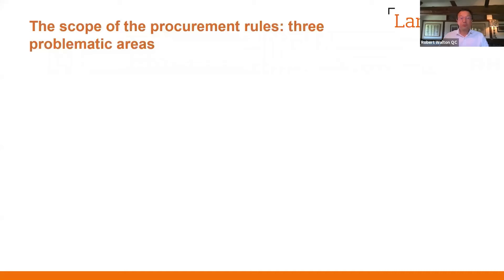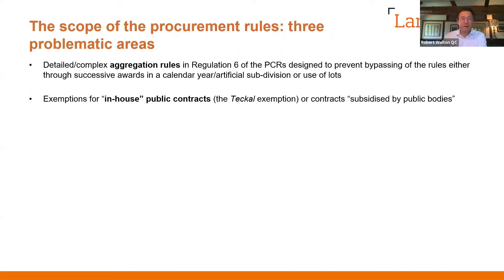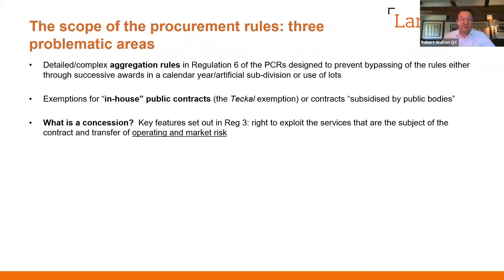Three problematic areas in terms of the scope of the rules. First, aggregation rules in Regulation 6, designed to prevent bypassing the rules through successive awards or artificial subdivision — the salami-slicing approach. Second, in-house public contracts under Regulation 12, following an ECJ decision in 1999, more recently considered in an Italian case on the award of a waste contract (ECJ 2016). Third, the definition of what a concession is under Regulation 3, with the key phrase being 'operating and marketing risk' — a complex area in its own right.